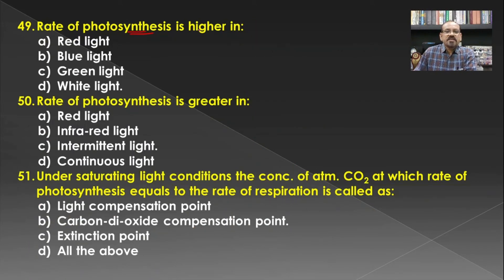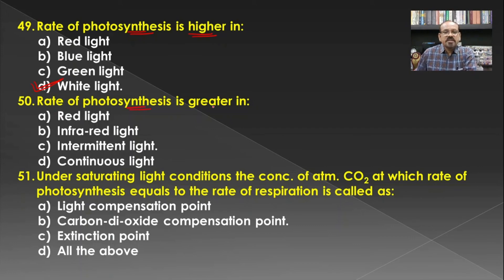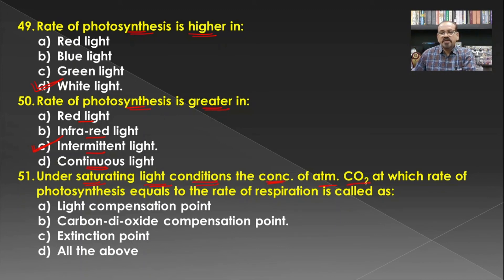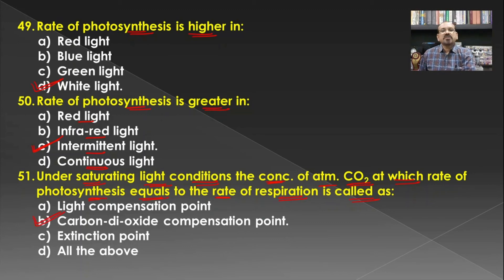The rate of photosynthesis is higher in C4 plants. Comparing different light conditions, the rate of photosynthesis is greatest in intermittent light. Under saturating light conditions, the concentration of atmospheric CO₂ at which the rate of photosynthesis equals the rate of respiration is called the carbon dioxide compensation point.